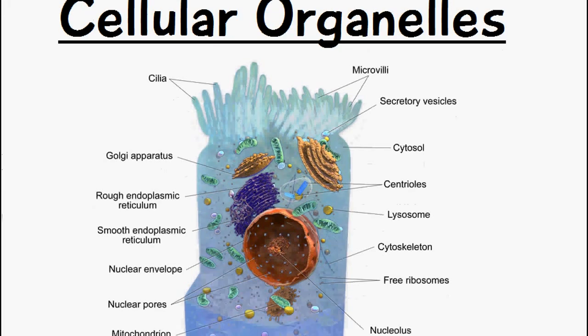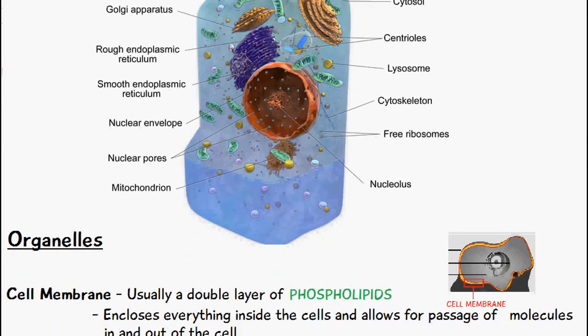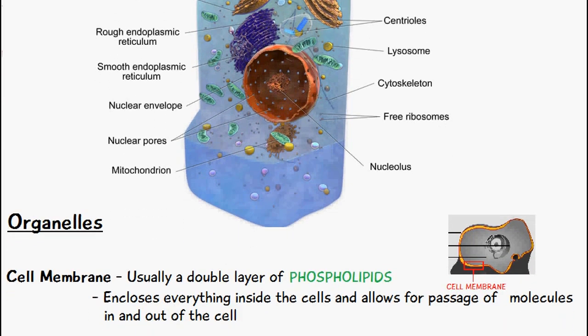I want to begin with the cell membrane. This is usually a double layer of phospholipids. We can see the cell membrane here is enclosing the cell, and that's its function — to enclose everything inside the cell and also allow for the passage of molecules inside and outside of the cell.